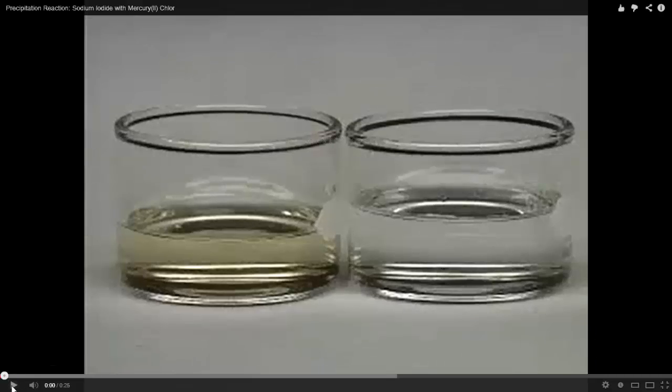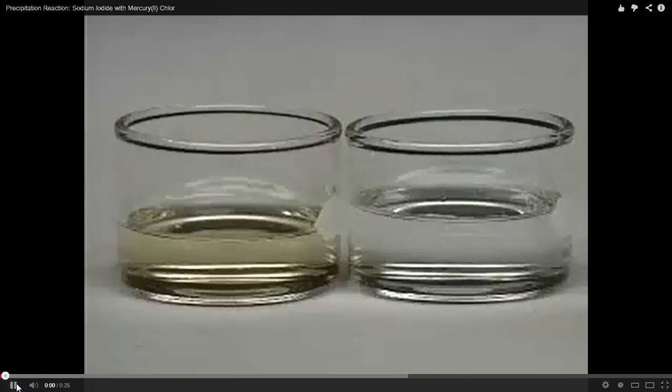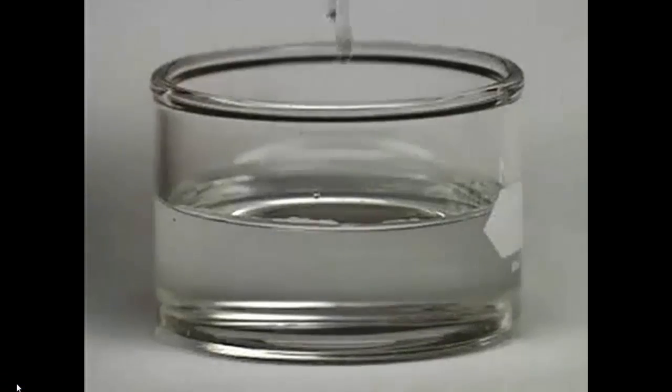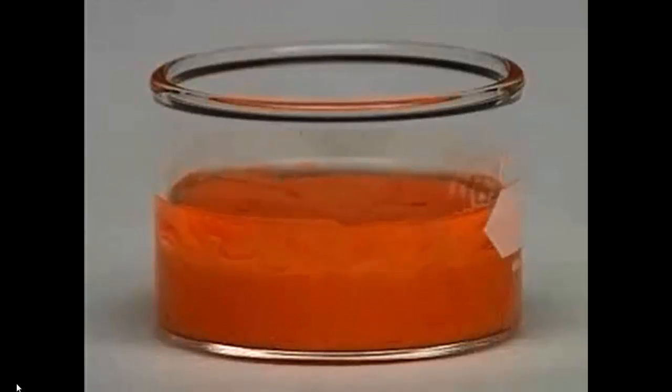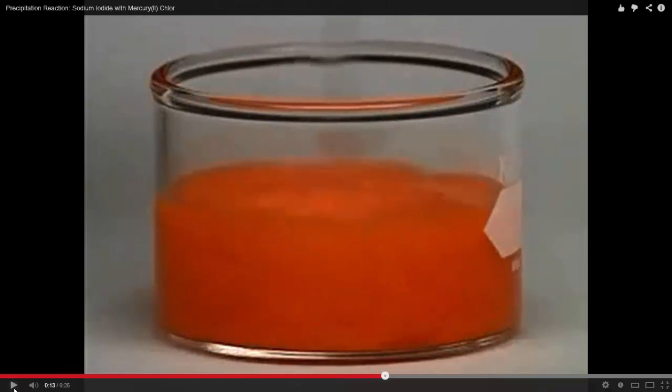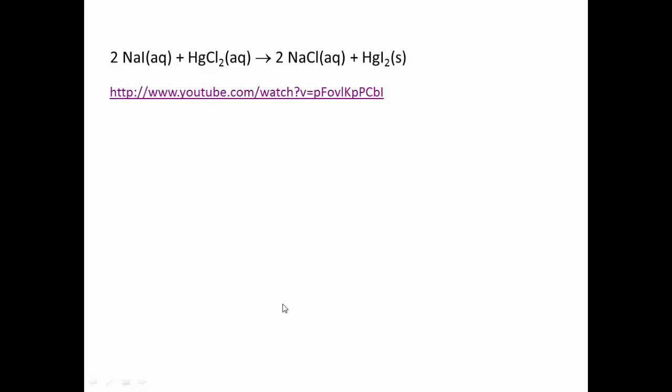And what she's going to do is show you a precipitation reaction. Adding very pale yellow sodium iodide to colorless mercury chloride produces an orange precipitate. She stirs it around and if you notice there's like a powdery substance in there. That is a solid and that is called the precipitate. So that is a precipitation reaction.